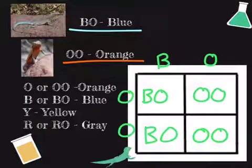Just from looking at the Punnett square, we know that 50% of their offspring are going to be blue, and the other 50% are going to be orange.